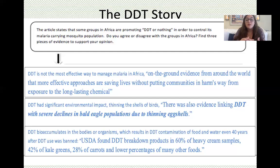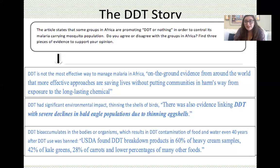The eggshell in a bird — the amniote — allows birds and reptiles to lay eggs on land. If this chemical DDT was thinning eggshells and resulting in bald eagle population decline, what could it be doing to the amniotic sacs of mammals, including humans? That is a legitimate question not directly addressed in the article, but if it's affecting the amnion, that is a very serious effect for reproduction.